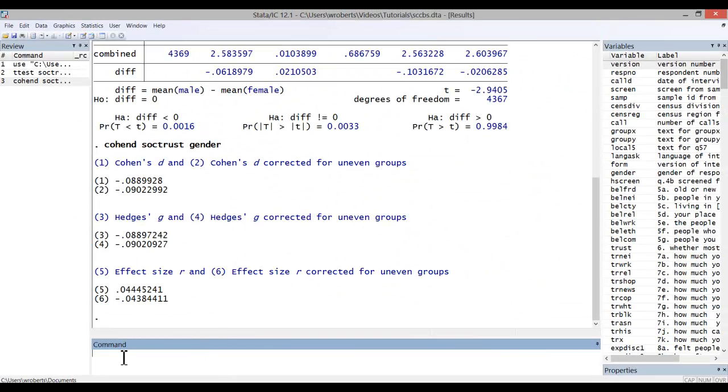This command produces three different measures of effect size, but we'll focus on just the first, Cohen's d and Cohen's d corrected for uneven groups. Typically, these are quite similar, particularly when rounded.